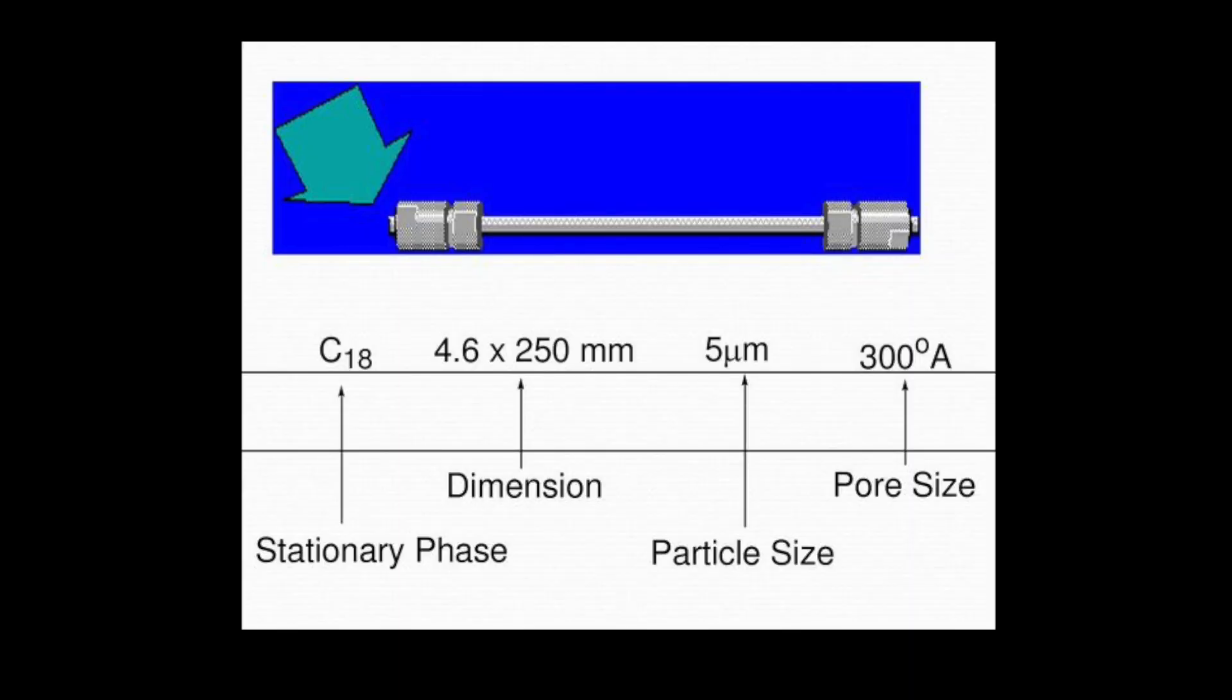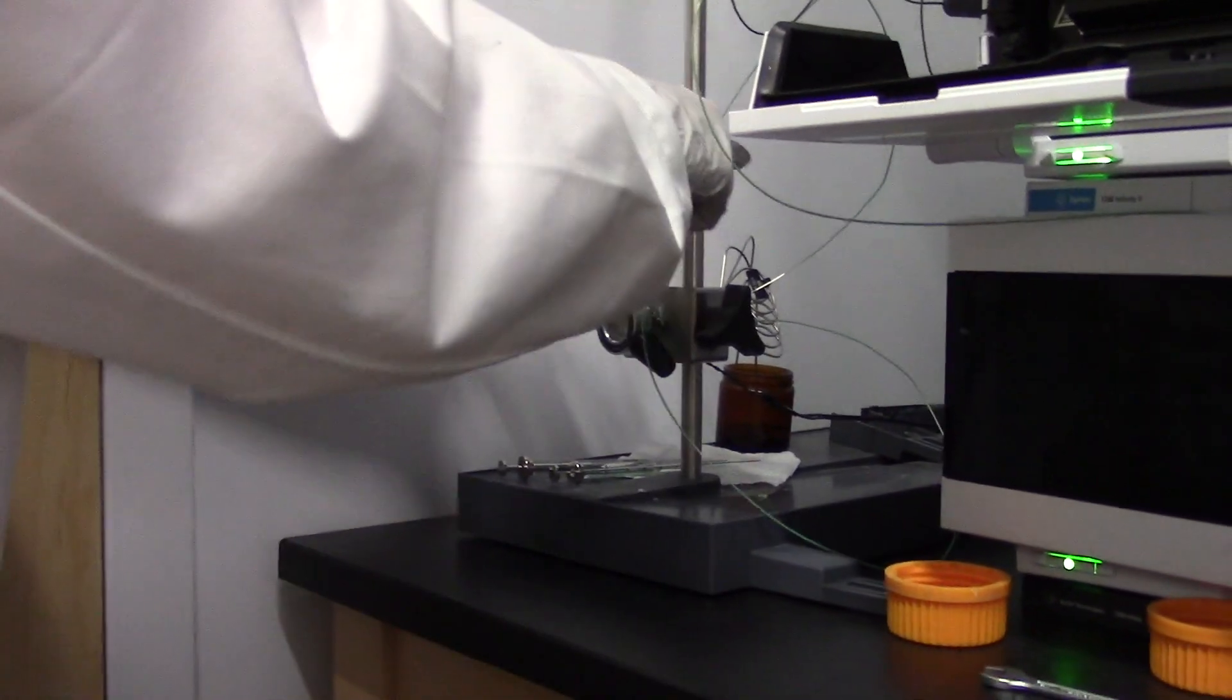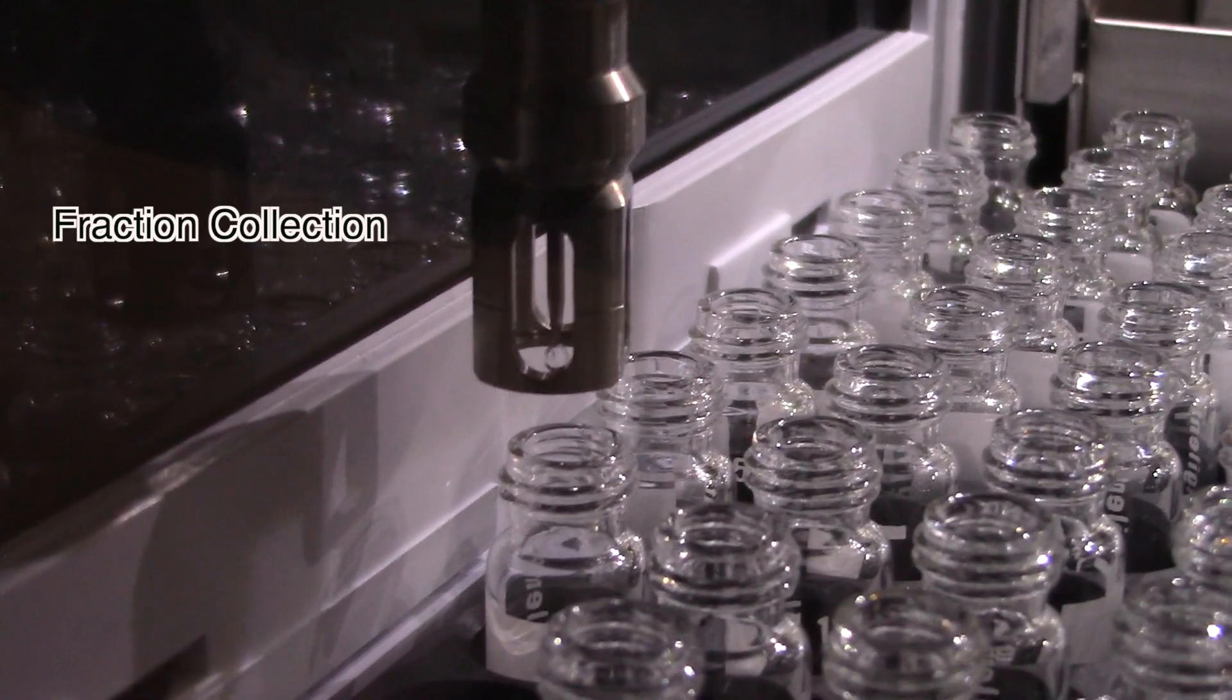It is relative to the volume the column can hold so that you can get an ideal peak that isn't too big or too small. Once you inject your sample, the mobile phase solvents are pumped into the column alongside your sample from the loop. Once your sample and the solvents go through the column and through the detector, it will either go to waste or to fraction collection, and your data will show on screen.